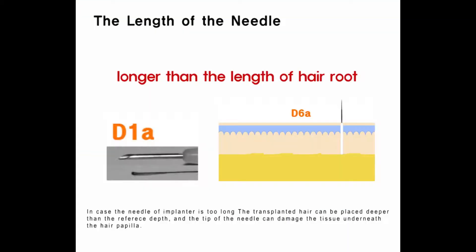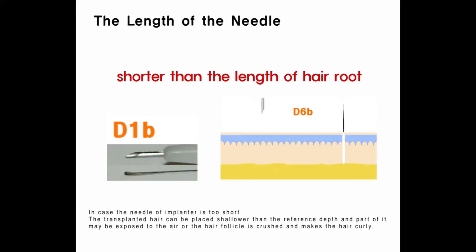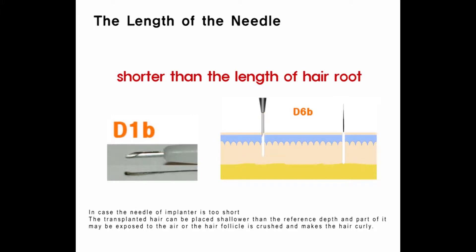In case the needle of the implanter is too long, the transplanted hair can be placed deeper than the reference depth and the tip of the needle can damage the tissue underneath the hair papilla. In case the needle of the implanter is too short, the transplanted hair can be placed shallower than the reference depth, part of it may be exposed to air, the hair follicle is crushed, and the hair may become curly.